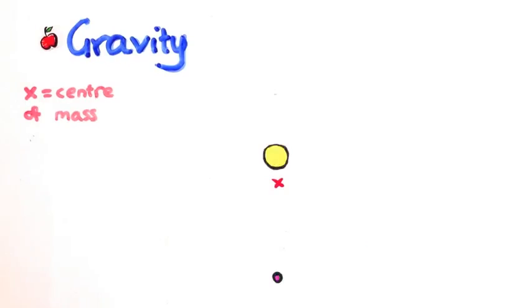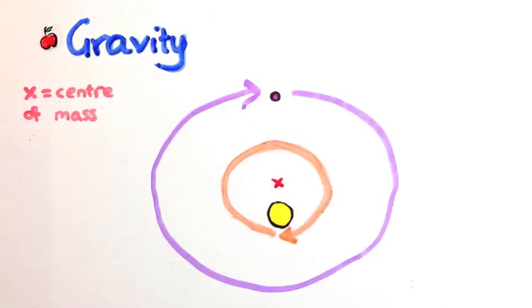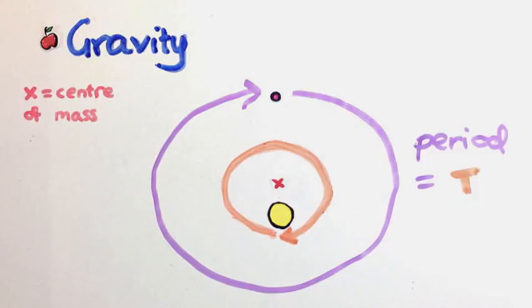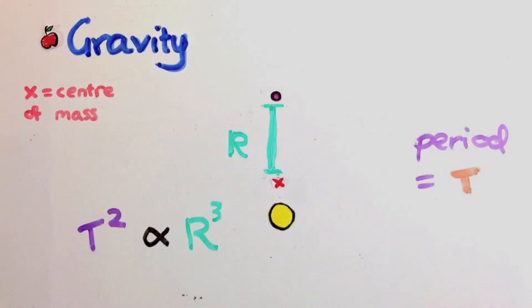Then you see the star takes exactly the same amount of time to do a full orbit as the planet does. So if you could measure the star's period, it tells you the planet's. But then you can use Kepler's laws to find out how far away the planet is from the centre.